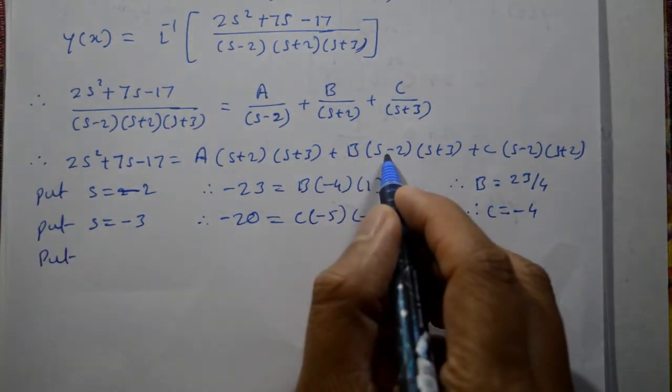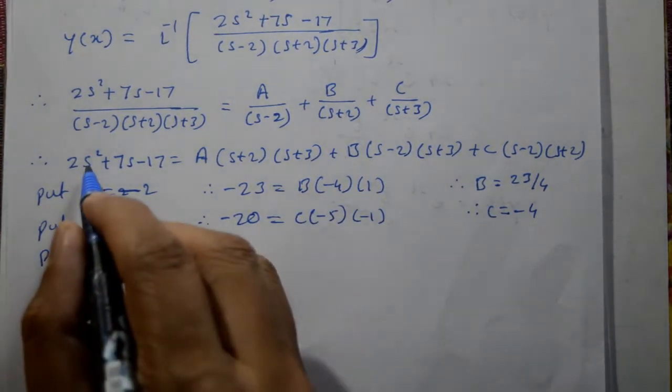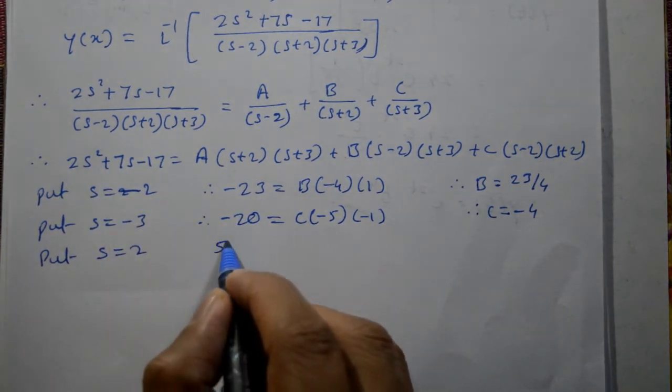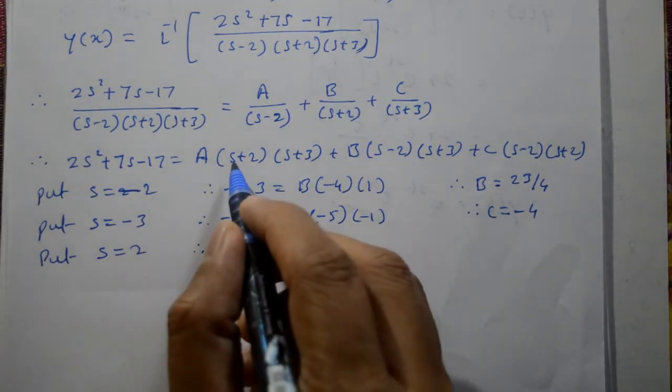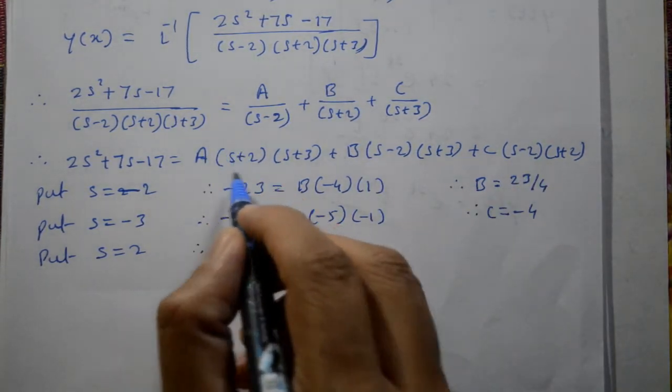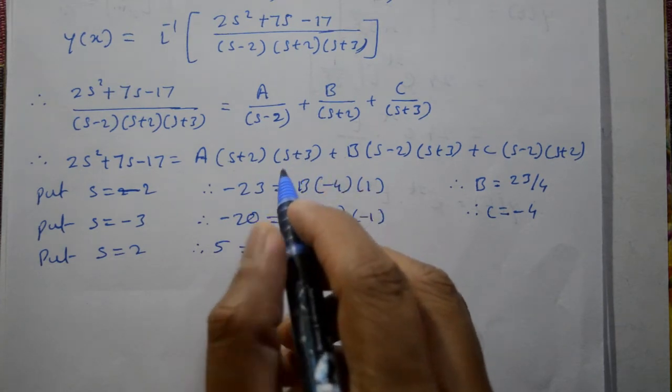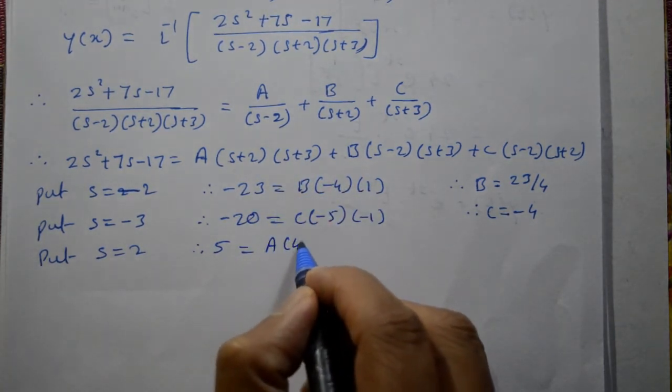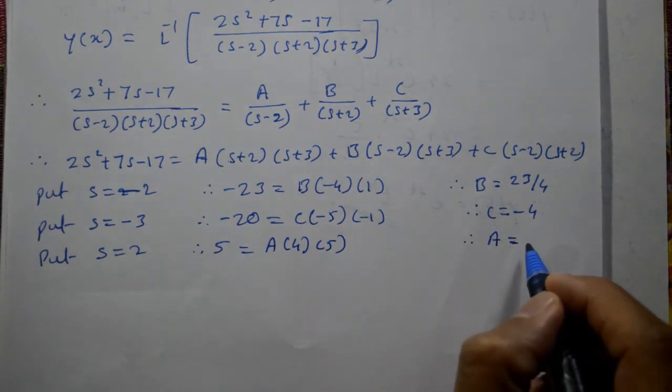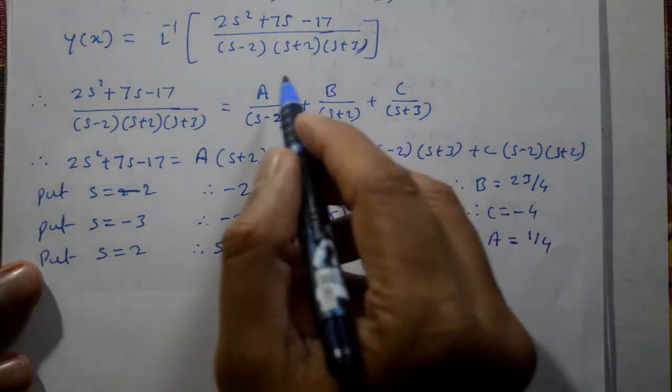Next we have s minus 2. s minus 2 is equal to 0, s is equal to 2. So s equals 2: 2 square is 4, 7 into 2 is 14, minus 17 gives 1. s equals 2 makes this zero, this zero, s equals 2 gives 4 and this is 5. Now a into 4 into 5, a is equal to 1 by 4. That is all: a, b, c substitute here.